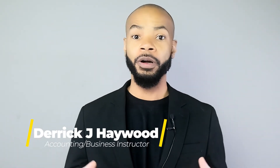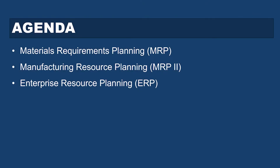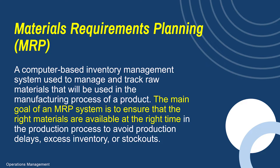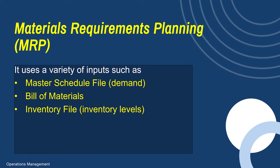Remember earlier I talked about planning for a meal — this is where MRP really gets into the planning aspect. Material requirements planning asks: what material is required for you to plan your product? MRP is about getting the right amount of material at the right place at the right time to support production and the things that you are producing.